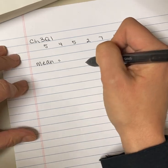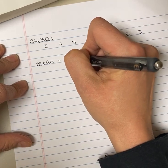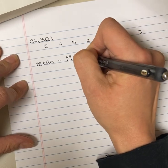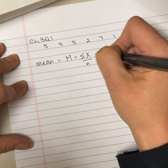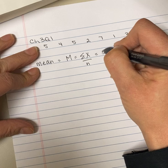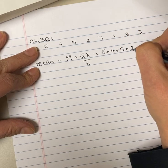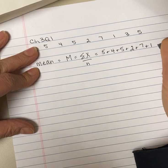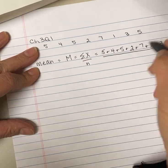It did say that it was a sample of scores, which means that the symbol is M. We're going to add up all of the scores and divide by the number of scores that we have. So on the top, in the numerator, we're going to have 5 plus 4 plus 5 plus 2 plus 7 plus 1 plus 3 plus 5, and we're going to divide that by the number of scores we have, which is 8.